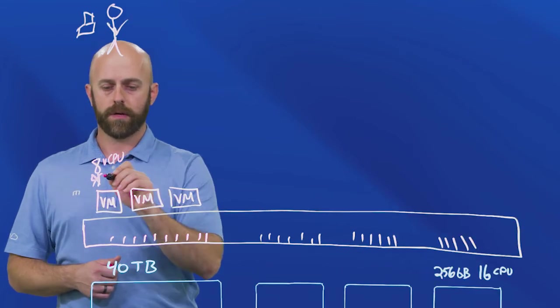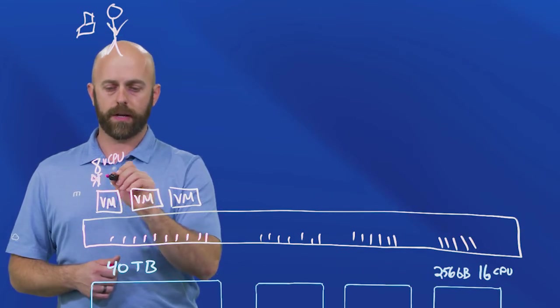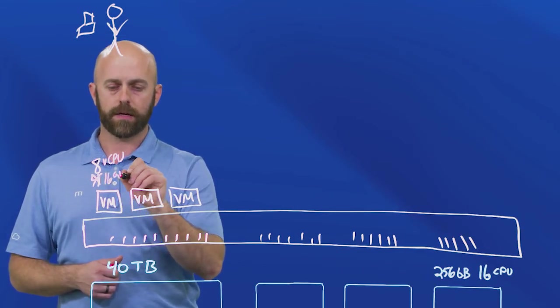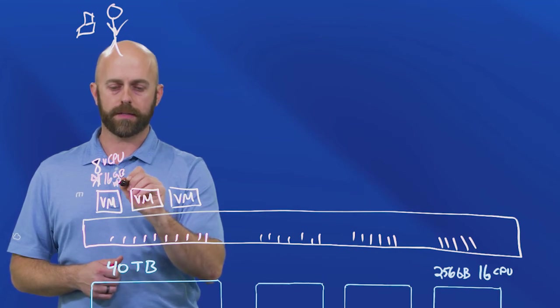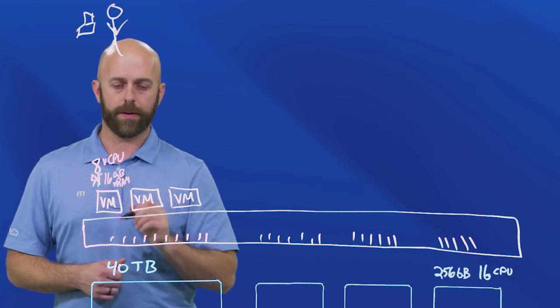So now we've got eight vCPU and we've also upgraded. Now we have 16 gigs of vRAM. And again, that's vRAM not RAM because it's virtualized.